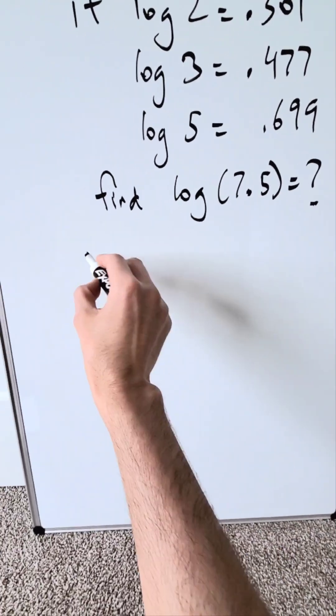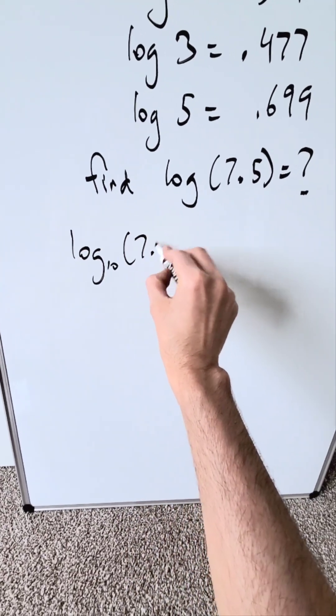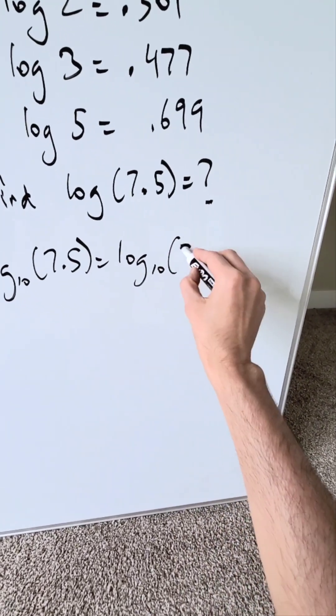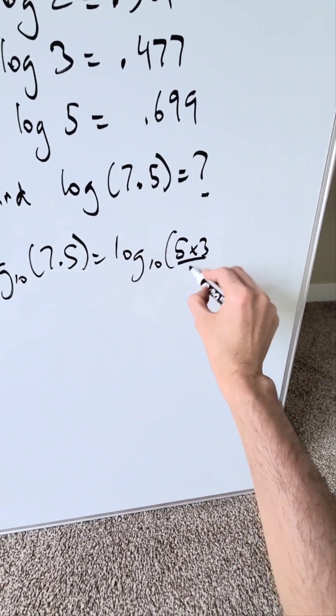How do we do this? Look over here. You're looking at log base 10 of 7.5, which is no different than log base 10 of 5 times 3 divided by 2.